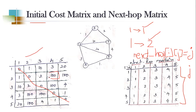For pairs like node 2 to node 4 where there is no direct path, the theoretical value would be infinity. Since we can't type infinity in code, we enter a higher cost value compared to any other cost in the matrix — here we have chosen 100. You can take any sufficiently large value. So this is the cost matrix and this is the next hop matrix.